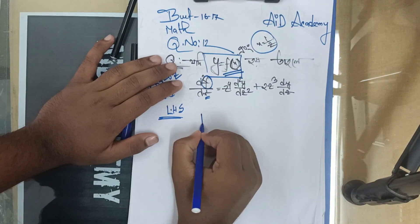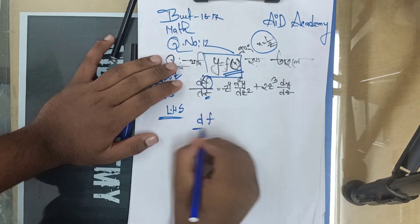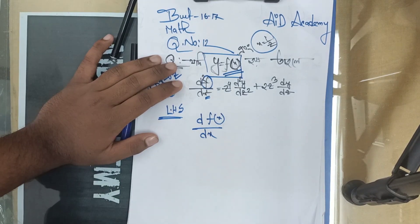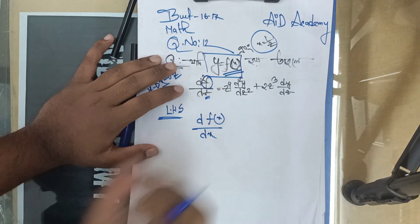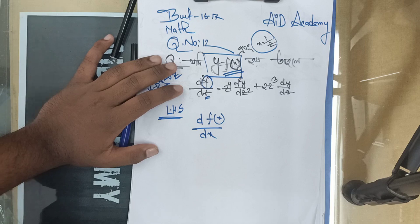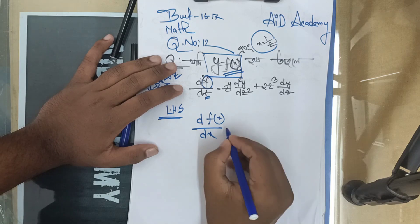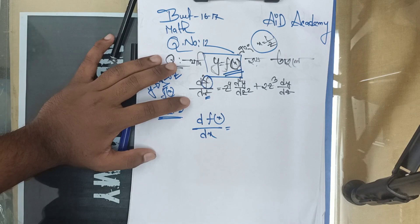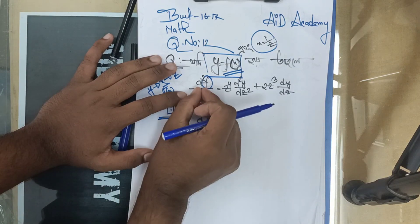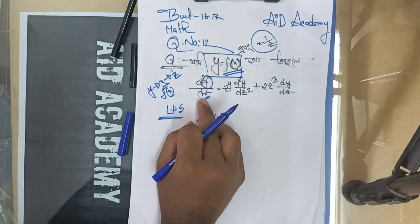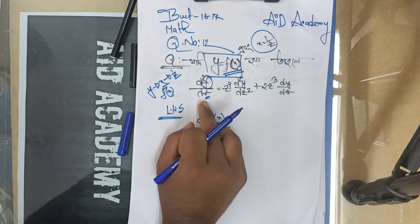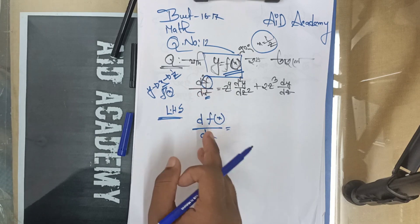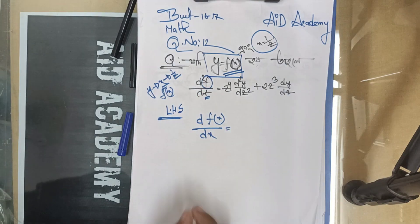When we do two times differentiation, we can apply f of x to the other part. Because of the left hand side, d squared f of x divided by dx — f of x will be f of x.